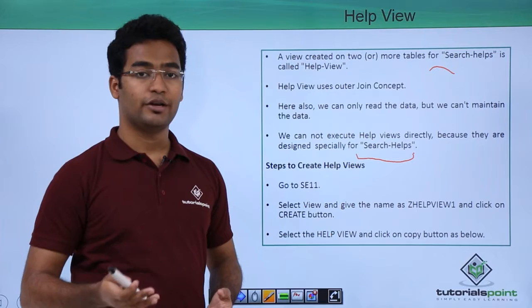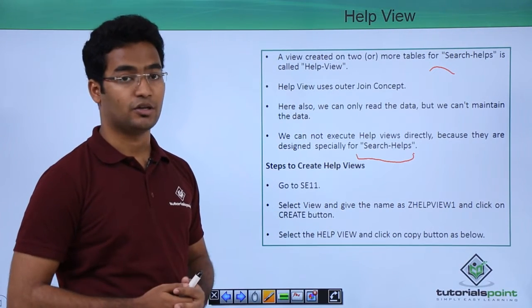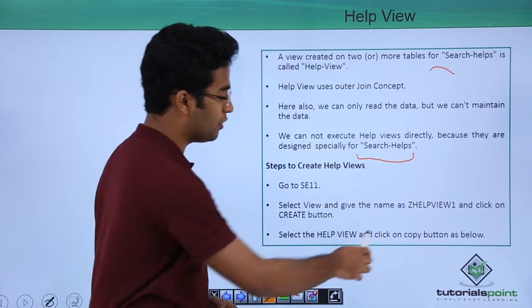Now let us look at the steps to create the help view. First we have to go to SE11, that is the ABAP dictionary. Then we have to select the views radio button and give a particular name.